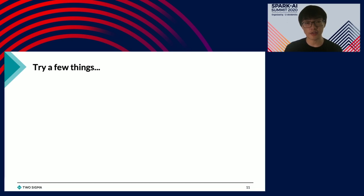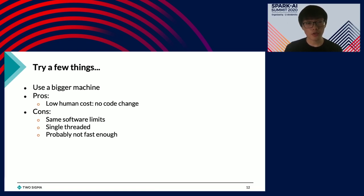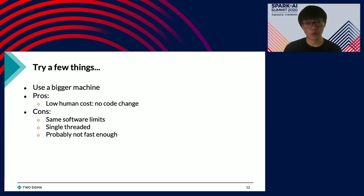So we want our code to run faster or to process larger datasets. What do we do? The first thing to try is using a bigger machine. Getting a bigger machine these days is not all that hard, and it has a very compelling reason: there are no code changes — you're running the same code on a beefier machine. However, this approach obviously won't get you very far because you still have the same software limits of Pandas running single-threaded, so although you might crunch through larger datasets given enough time, it won't be very fast.